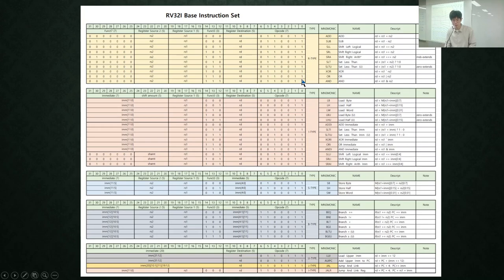There are instruction codes which are 32 bits. Operation code, function 3, and function 7 define what kind of operation is performed, what kind of instruction is executed by the CPU. RS2 and RS1 is where the data come from, and RD is where data is heading to. There are R-type, I-type, S-type, B-type, U-type, J-type, and JI-type instructions.